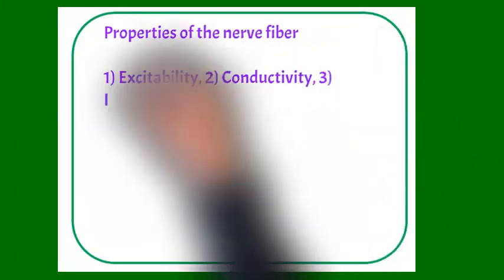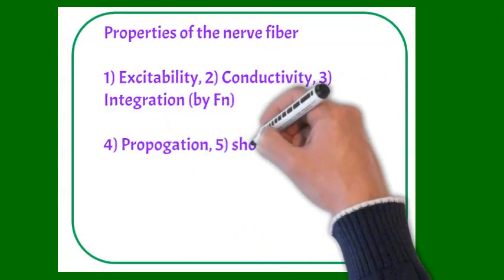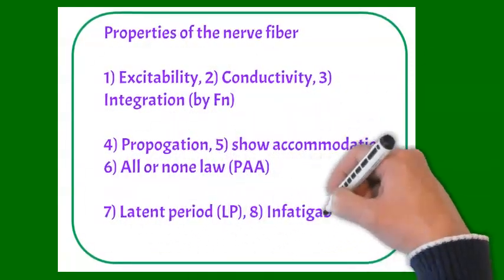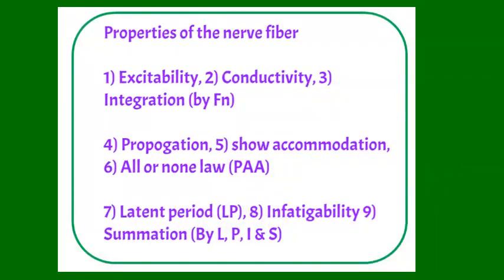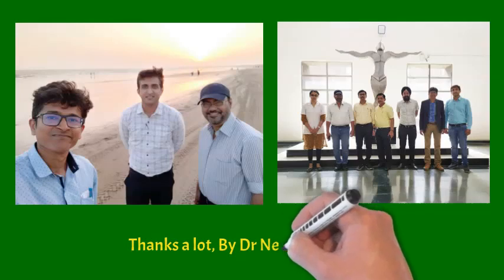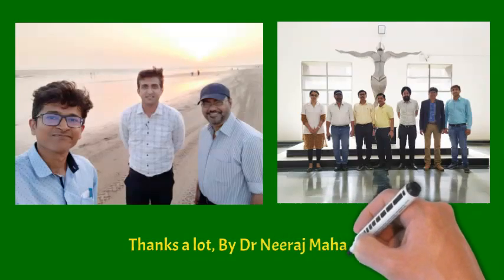So friends, we have done nine properties. First three properties by function, next three properties by a mnemonic PAA, and last three properties by a small line, last part is summary. Thanks a lot, friends. I am Dr. Neeraj Mahajan.